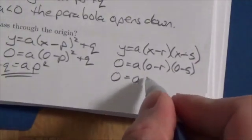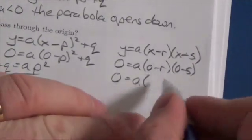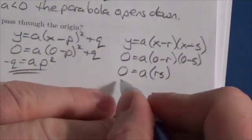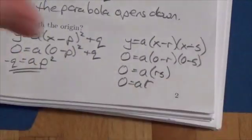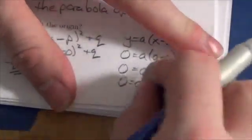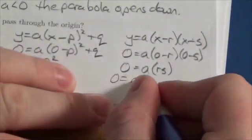Essentially, when you multiply those together, you get ARS. In other words, 0 equals ARS.